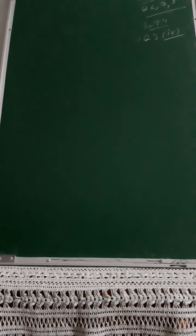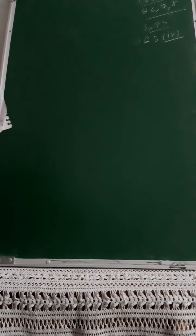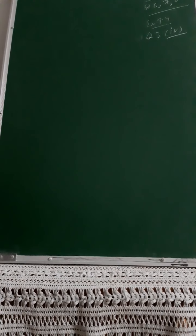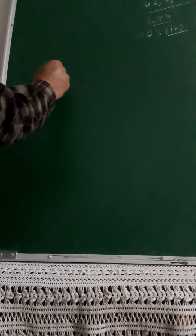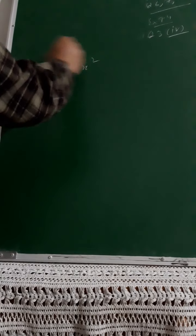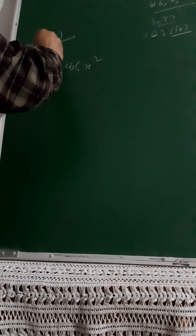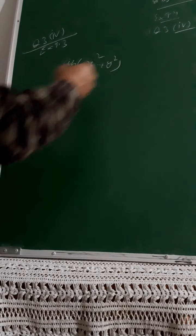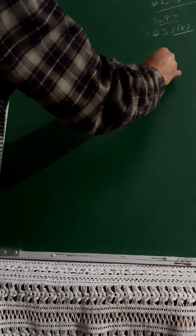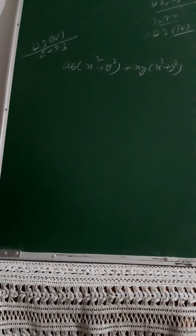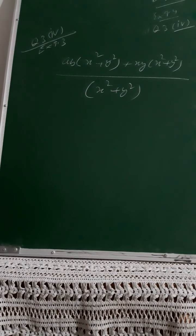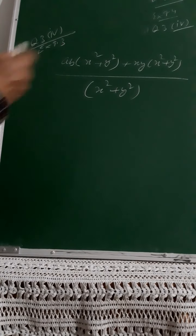The next query is how to solve exercise 9.4, question number 3, part number 4. Here the expression is ab(x square plus y square) plus xy(x square plus y square), and you need to divide it by (x square plus y square). This is a binomial — two terms. Notice that x square plus y square is part of each product, which we can take common.